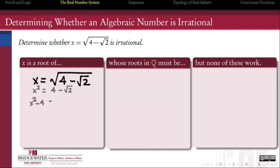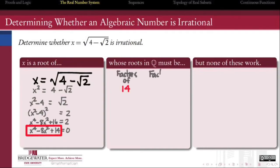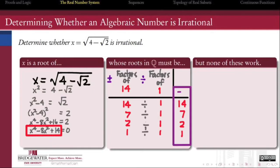So how do we know whether an algebraic number is irrational? If we know a polynomial of which it is a root, then we can use the rational roots theorem to classify what are all of the possible rational roots of that polynomial.